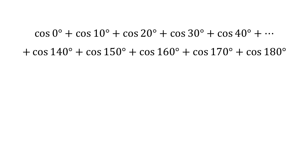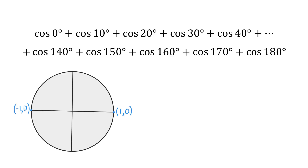To understand how to find the value of this expression without the use of a calculator, we will use the unit circle. From the unit circle, we see that when the angle is 0 degrees, cosine is equal to 1, but when the angle is 180 degrees, the value of cosine is negative 1. So if the value of cosine of 0 is 1 and the value of cosine of 180 degrees is negative 1, then these two terms will cancel each other.